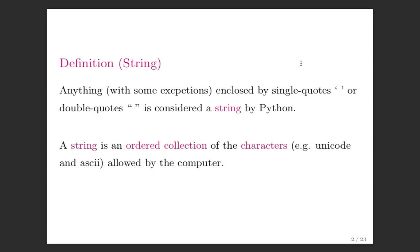Today we're going to introduce a new data type. We have integers, floats, booleans. Today we're going to introduce something called the string. This is very exciting because a string is interesting enough that I can start showing you interesting things, because a string is an ordered collection of single characters. By characters here I mean things like Unicode and ASCII allowed by the computer. So it's basically a list, and now I can do all the fun list type of stuff.